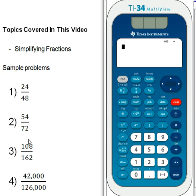The next one is a fairly large fraction which would be kind of a pain to reduce by hand, but the calculator makes it really quick. 108, fraction button, 162. Hit the right arrow to get out of that fraction and then hit enter. It tells us it's 2 thirds. So 108 over 162 is equivalent to 2 thirds.